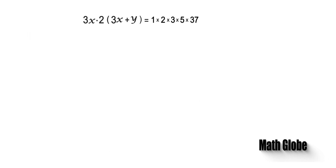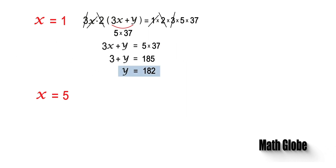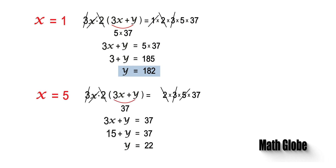Let's stop here for a moment. We have two variables but only one equation in hand, and we need to solve the equation for Y to get the unknown length. Thus we must substitute the values X equals 1 or X equals 5 into the equation and check if the resulting Y values are valid. When X equals 1, Y becomes 182, and Y is 22 for the X value of 5.